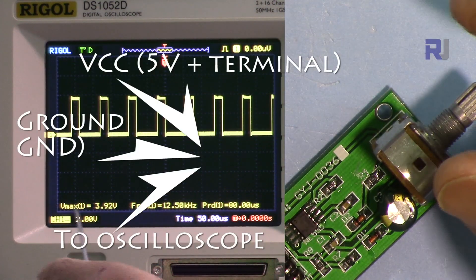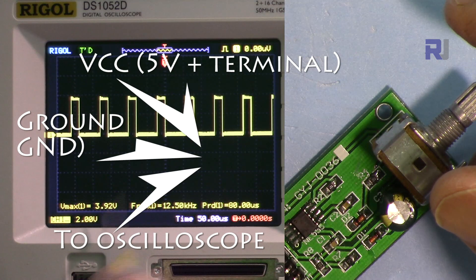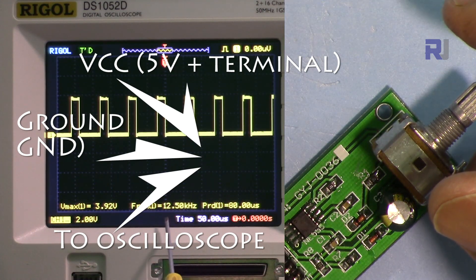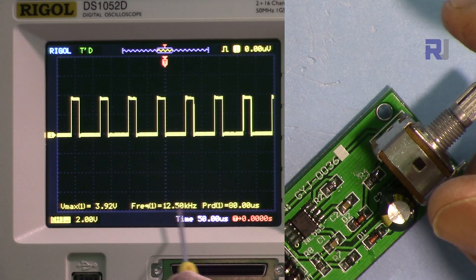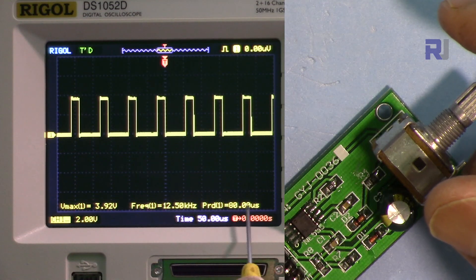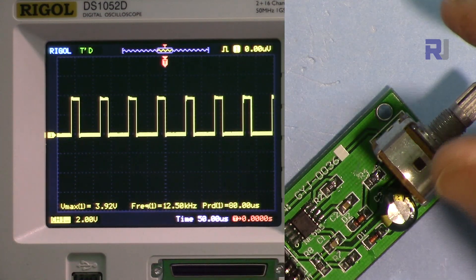This is showing the voltage and the frequency is 12 kilohertz. We are going to see how stable is the frequency, and the period is 80 microseconds.